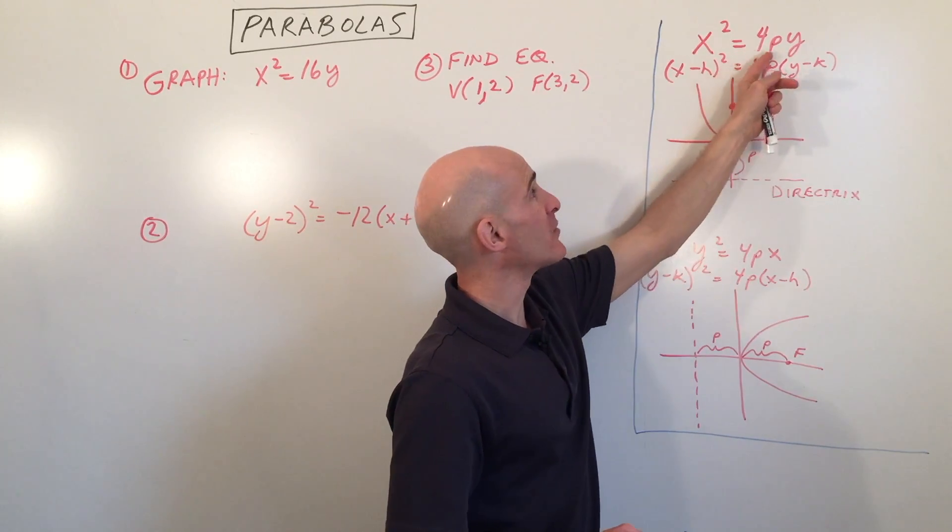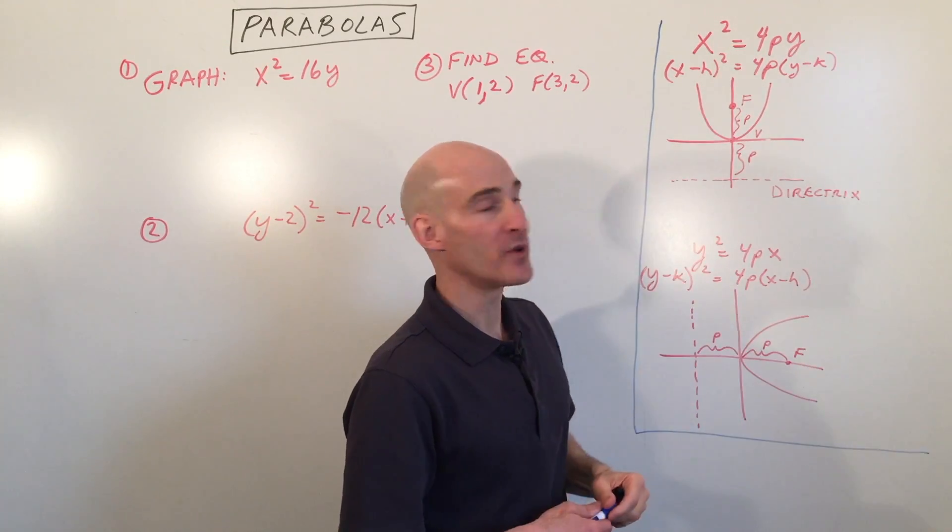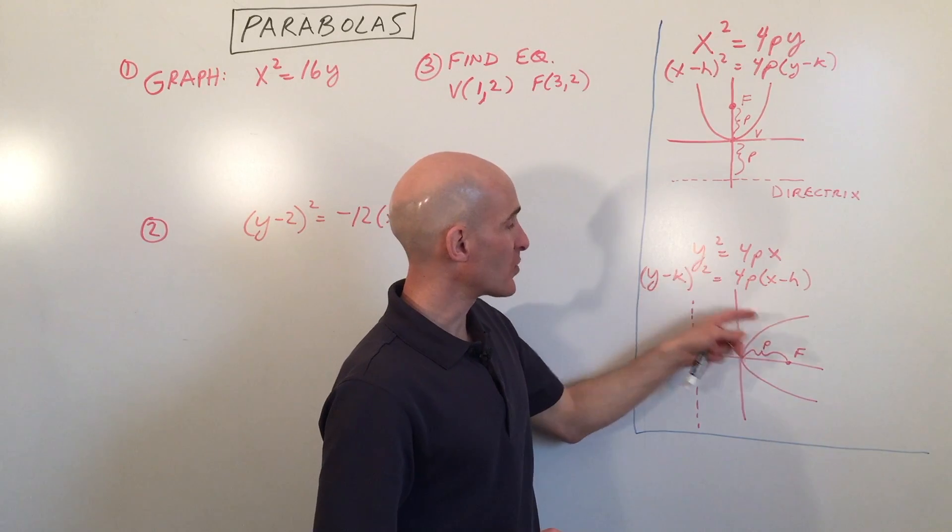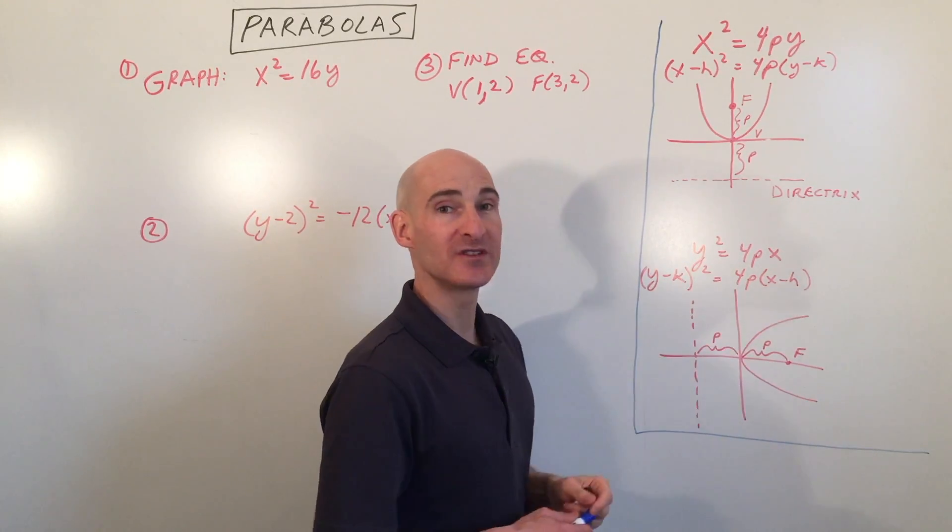Depending whether this coefficient here, the p value, is positive opening up or negative it will be opening down. Same thing with y². If p is positive, it's going to open to the right. If p is negative, it will open to the left.